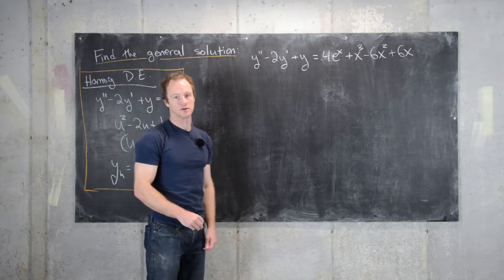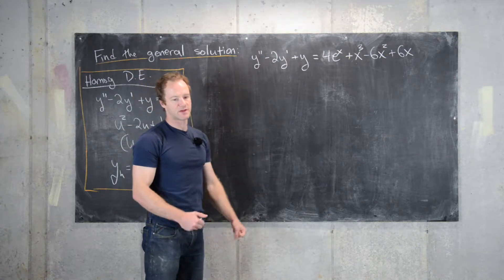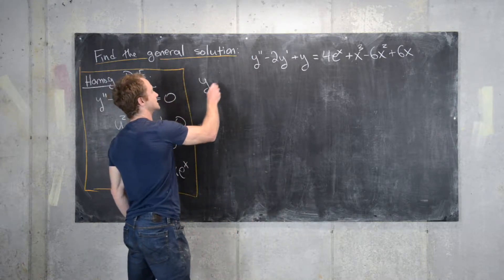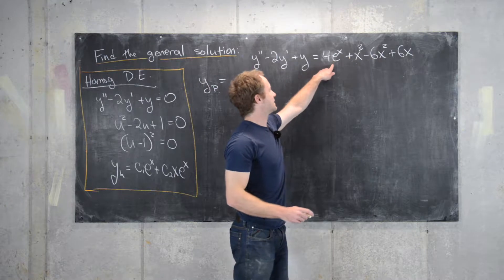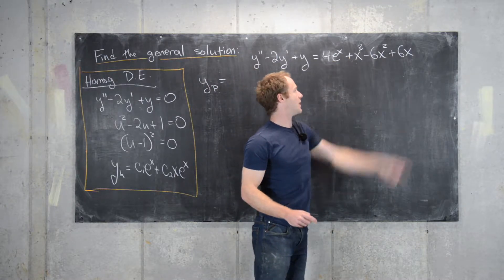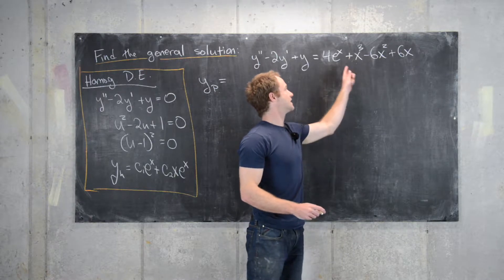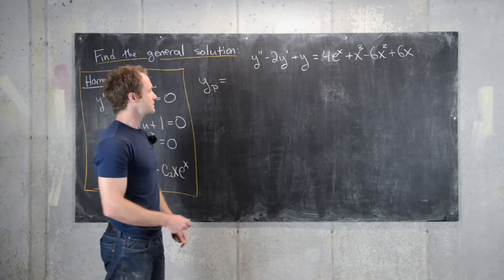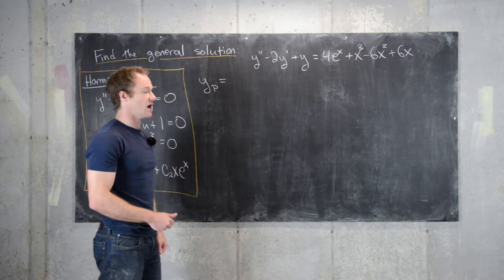Now we want to find a particular solution using the method of undetermined coefficients. Our particular solution will have an exponential part coming from the 4e^x term, and a polynomial part — most likely cubic — from the cubic polynomial on the right-hand side.